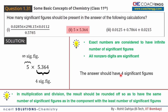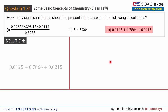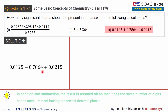Now I will move on to the third part. In the third part, three numbers are given and they are added together. For addition and subtraction, a different rule applies: the result is to be rounded off so that it has the same number of digits as the measurement having the fewest decimal places.